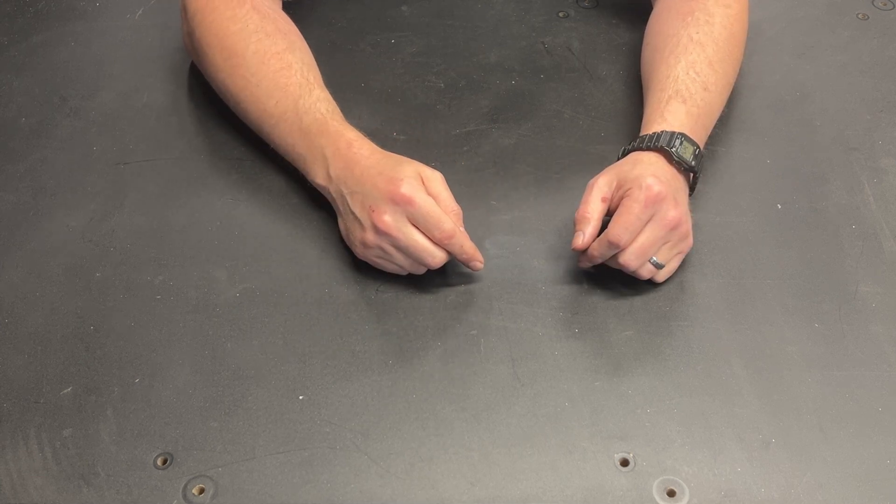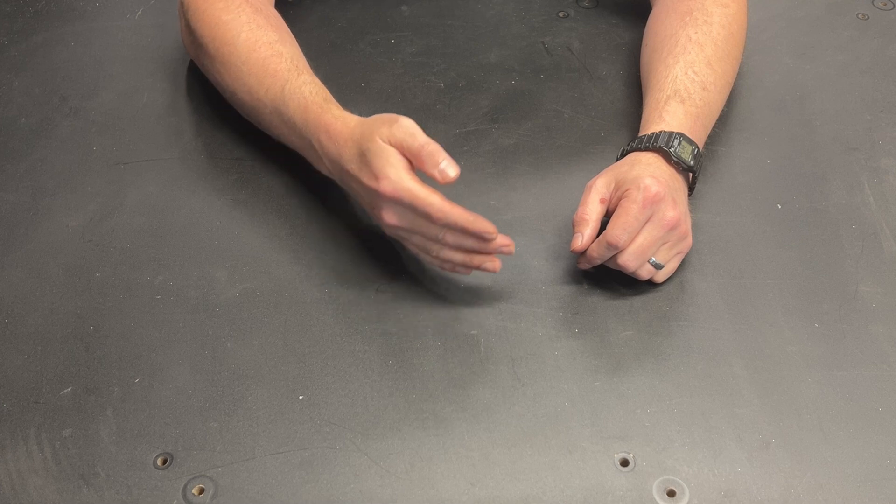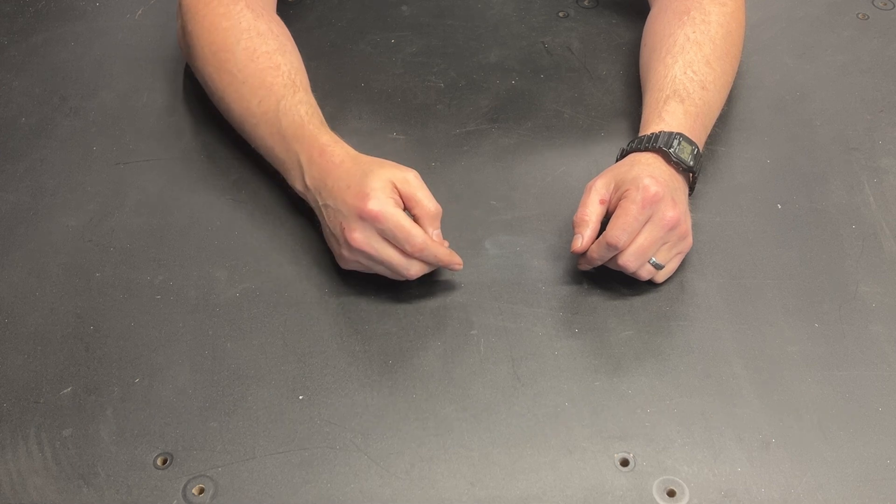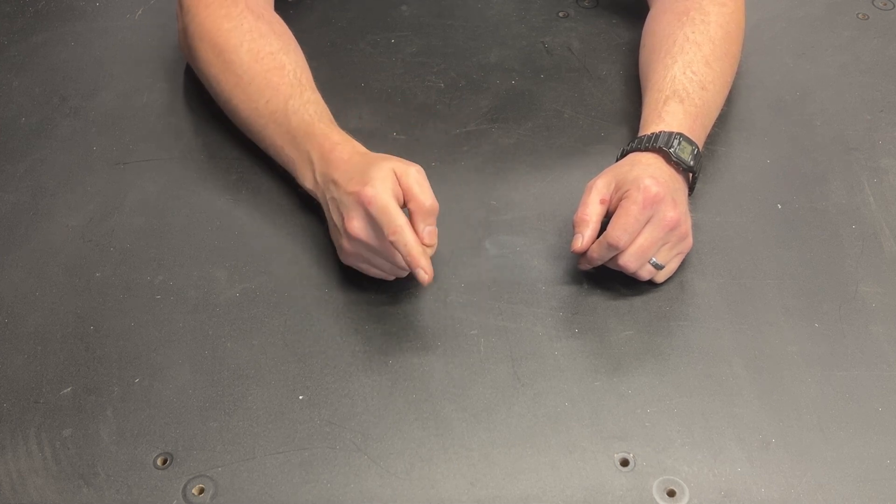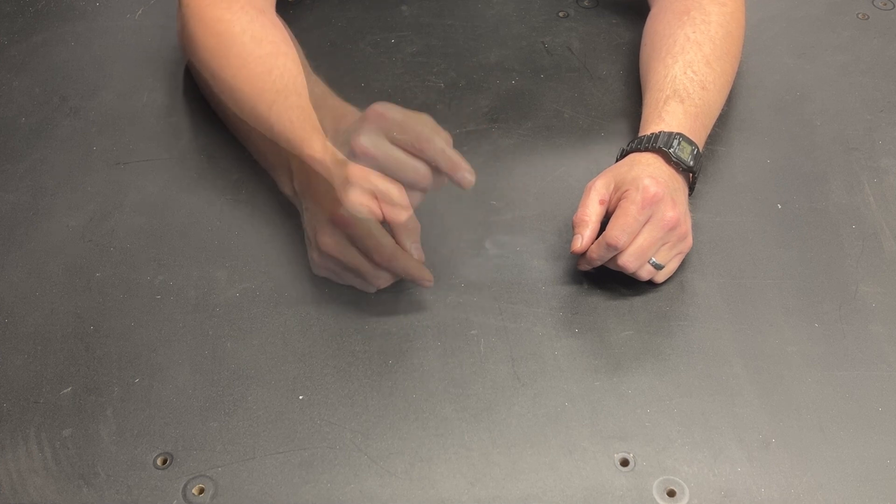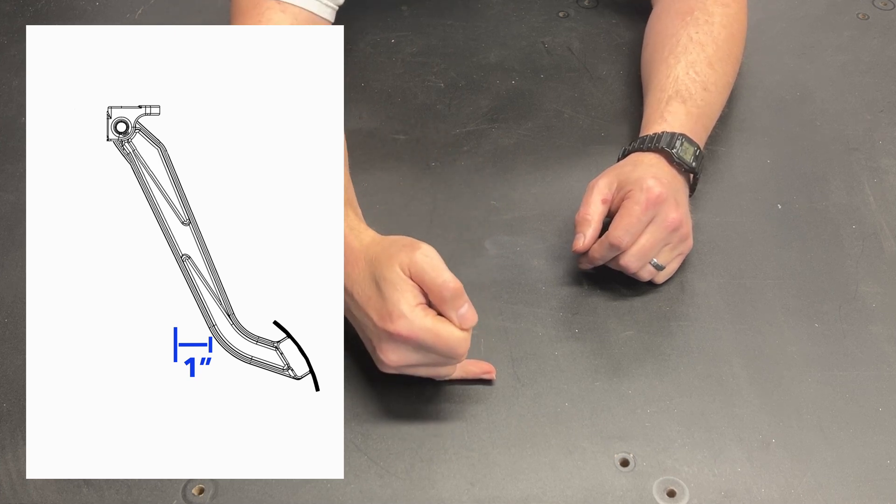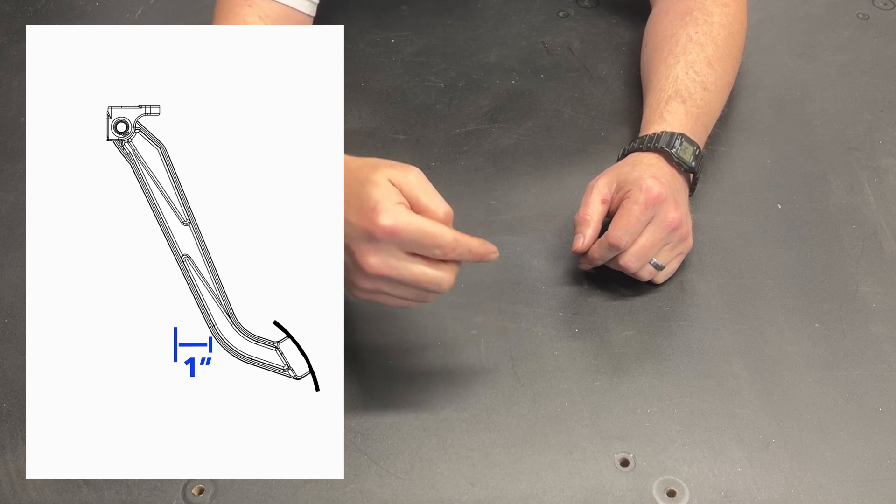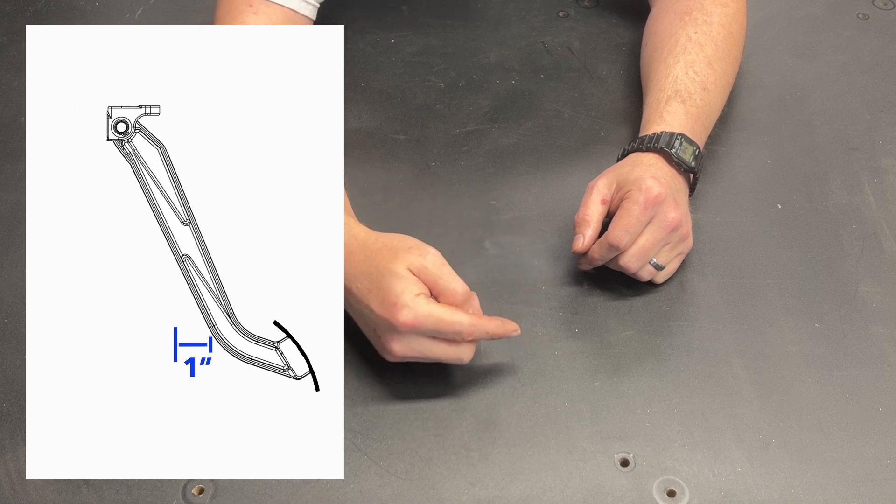The first thing we want to talk about is pedal ratio, and simply what that means is the stroke of the master cylinder in relation to the stroke of the pedal. Now I just heard myself say that and that seems a little bit confusing. Let's unpack this a little bit. Let's say that for your application your master cylinder needs to move one inch. Now let's say that you attach that master cylinder further down from the pivot point on the pedal and the result is that one inch of pedal stroke equals one inch of master cylinder stroke.